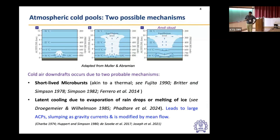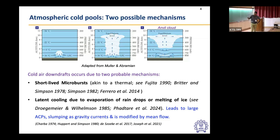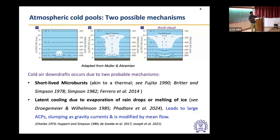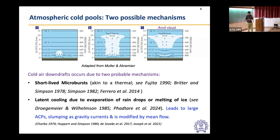A typical genesis of atmospheric cold pools is adapted from Mueller and Abramian. Thermal convection at the surface allows the air parcel to cross the LFC — the level of free convection. Once it crosses the LFC, it is buoyant, keeps rising, condenses, forms an anvil cloud, and starts spreading at the equilibrium level. After that, there are two probable mechanisms by which cold air downdrafts can occur. One is a short-lived microburst where the anvil cloud system entrains moist air, leading to a blob of cold air moving downwards as a thermal — an intermittent phenomenon of about one kilometer scale that doesn't sustain for long.